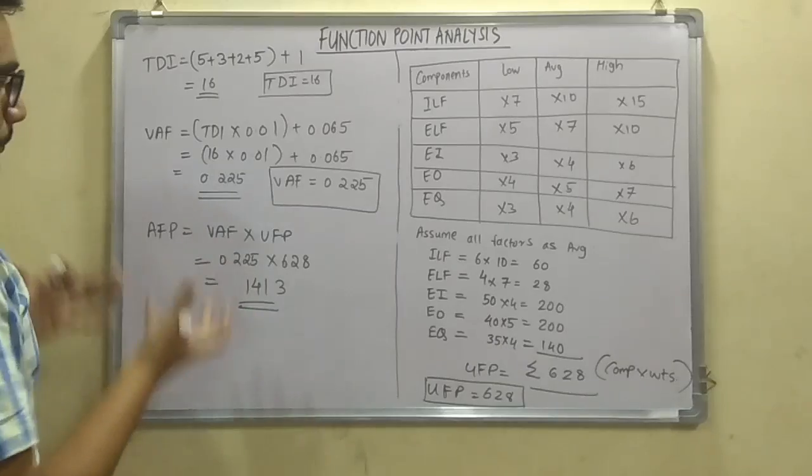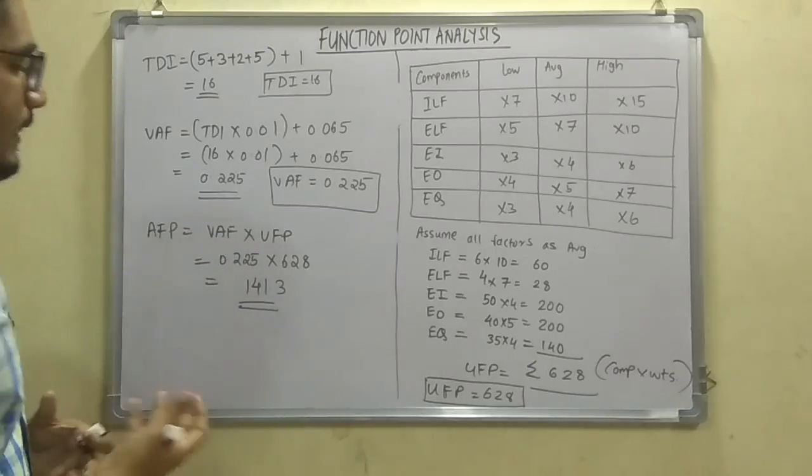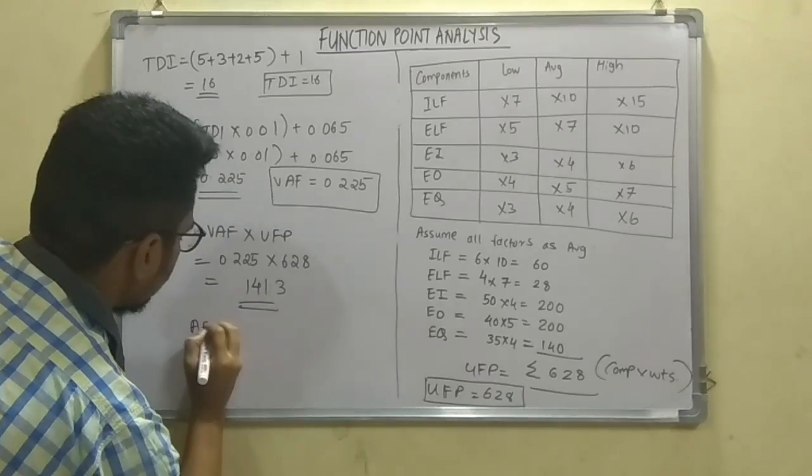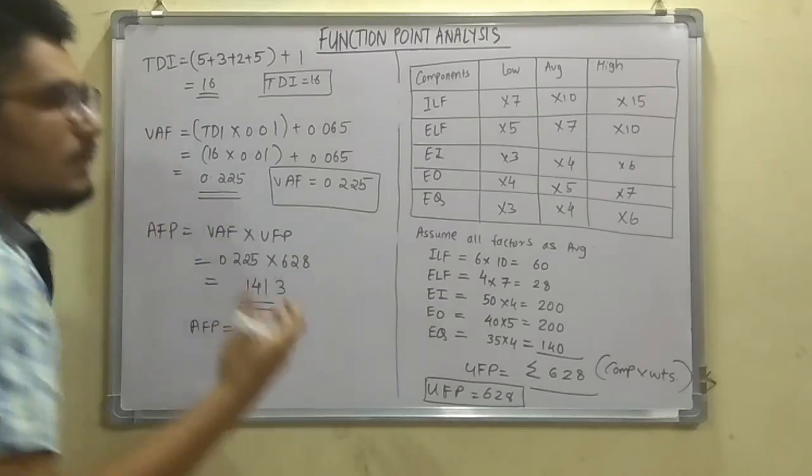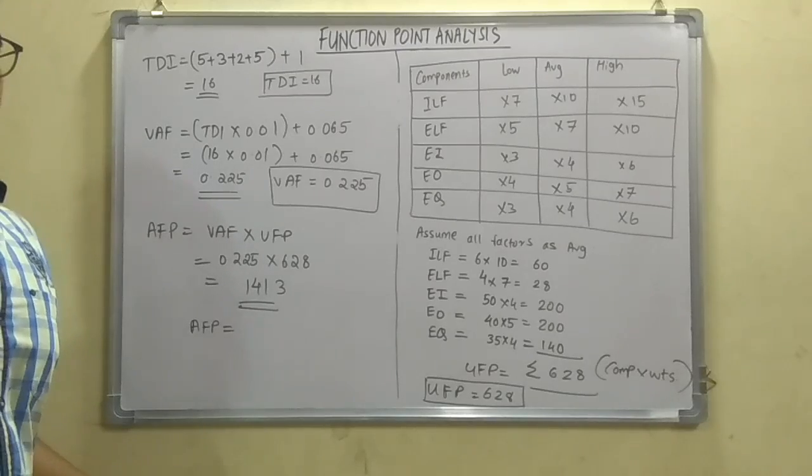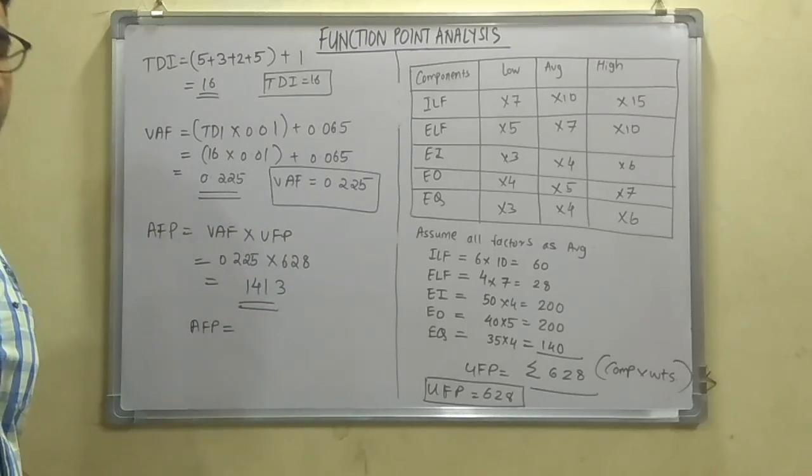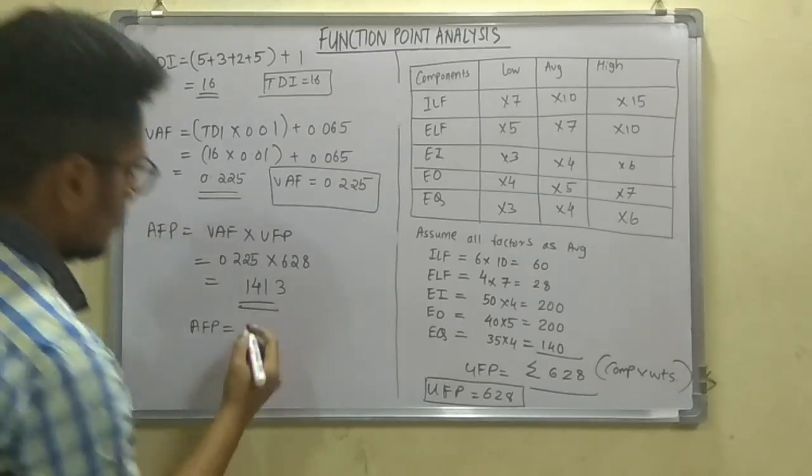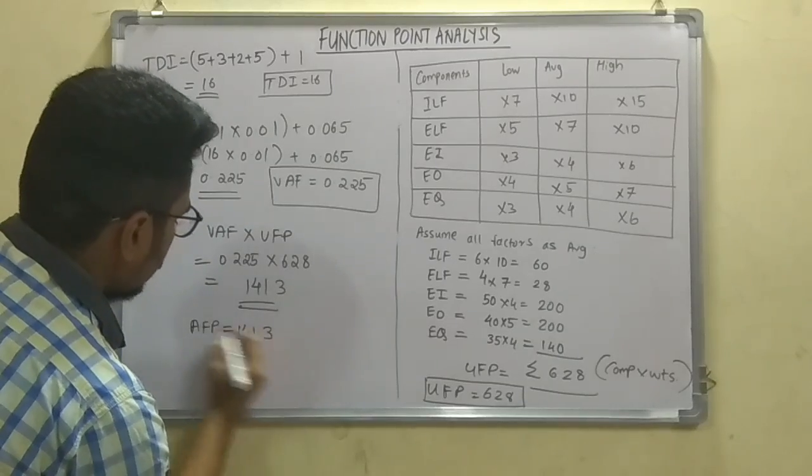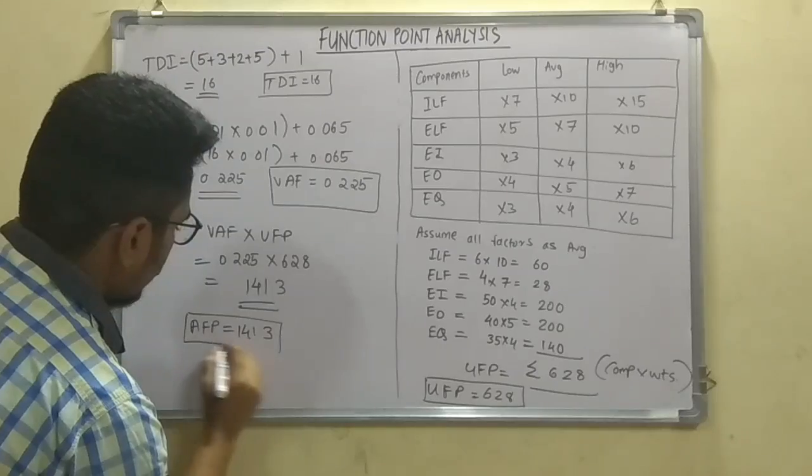So these are the points. These points will actually determine how many test efforts in terms of the time, or in terms of the resources, or the manpower or skill required to complete the actual project based upon the software lifecycle. So this is the final answer, that is the AFP, which is calculated based on the function points that we have given.